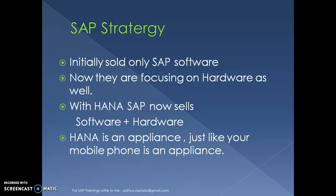SAP's organizational strategy has shifted. Previously they were more focused on selling only software, but now SAP sells a combination of hardware plus software. HANA is an appliance — meaning it's a combination of software and hardware. Just like when you purchase a smartphone, you cannot purchase the software and hardware separately — it's a combination of both. That is what we call an appliance.